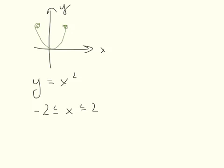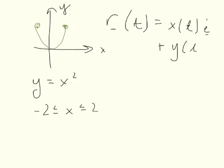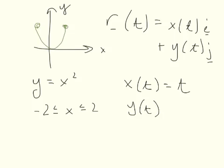To parametrize, we want to create a family of vectors, r of t, so that the points x of t, comma y of t, are the same as the points that are on our curve. And the easiest way to do this when we're given an equation to start with is just let x of t equal t. So, y of t equals x squared equals t squared,